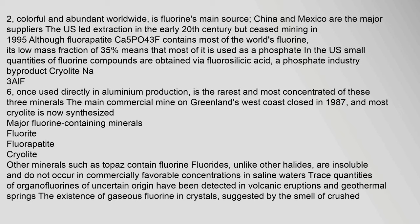Colorful and abundant worldwide, fluorite is fluorine's main source. China and Mexico are the major suppliers; the US led extraction in the early 20th century but ceased mining in 1995. Although fluorapatite, a calcium phosphate, contains most of the world's fluorine, its low mass fraction of 3.5% means most of it is used as a phosphate. In the US, small quantities of fluorine compounds are obtained via fluorosilicic acid, a phosphate industry by-product. Cryolite (Na₃AlF₆), once used directly in aluminium production, is the rarest of these three minerals. The main commercial mine on Greenland's west coast closed in 1987, and most cryolite is now synthesized.